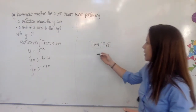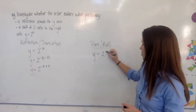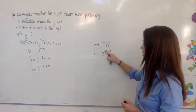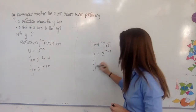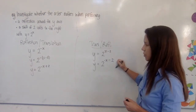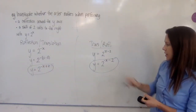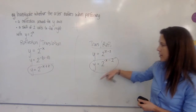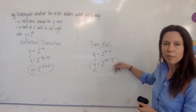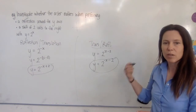Now the other way: we first replace x with x minus 2 for the translation, and then to perform the reflection we replace x with negative x, giving us negative x where the x was, and then minus 2. You can see straight away that these two formulas look different. They both have y equals 2 to the power of minus x, but one says plus 2 and the other says minus 2. This should be a red flag that the order is going to matter, because plugging these into Desmos will give two completely different graphs.